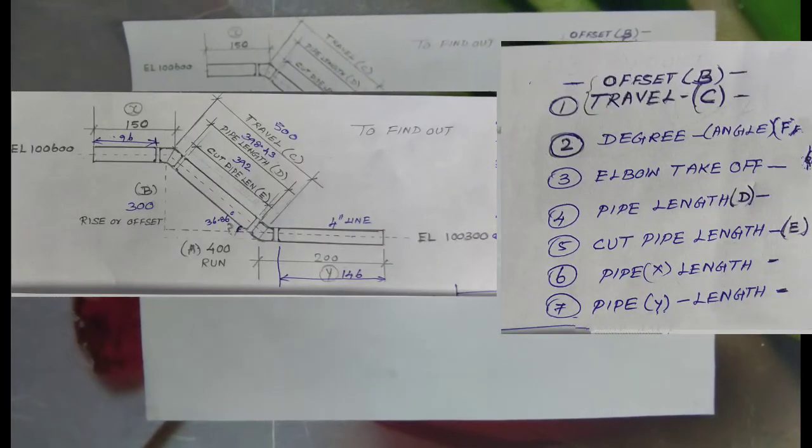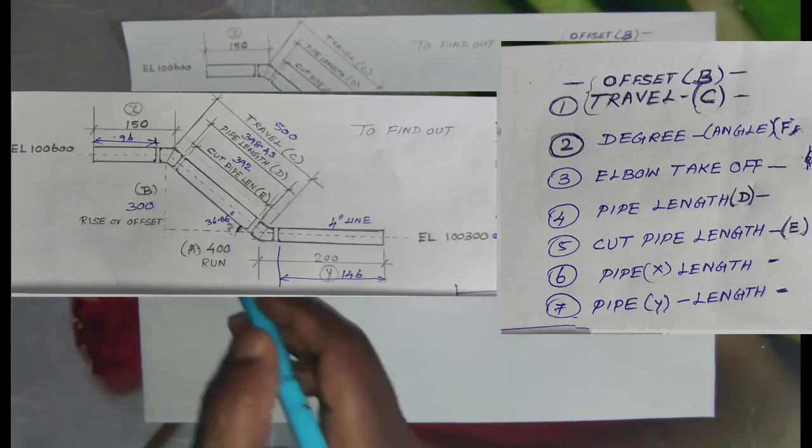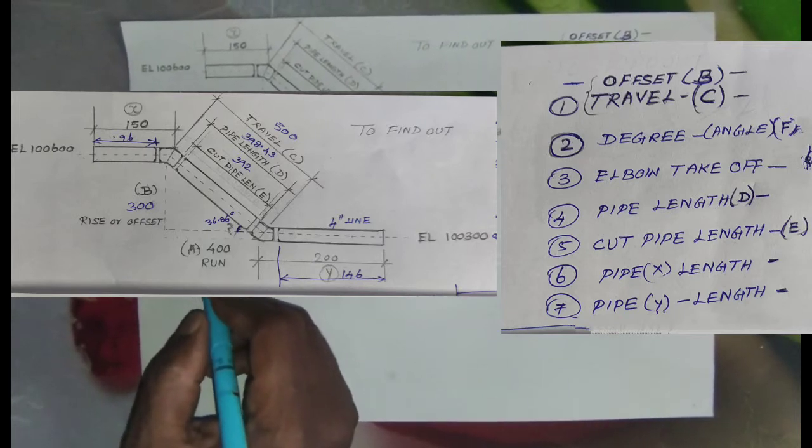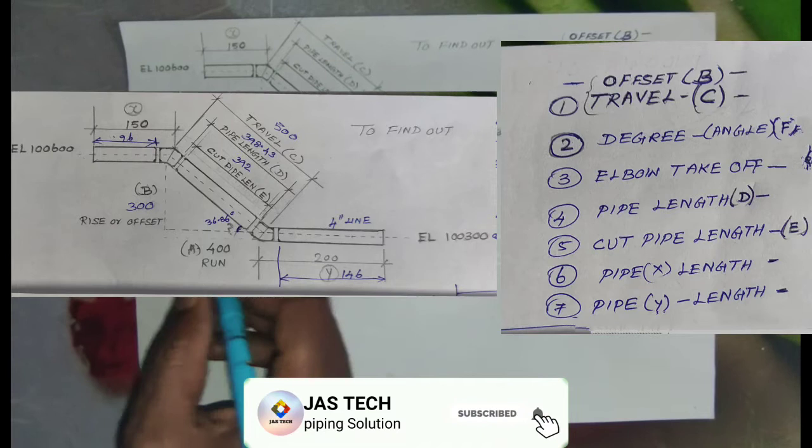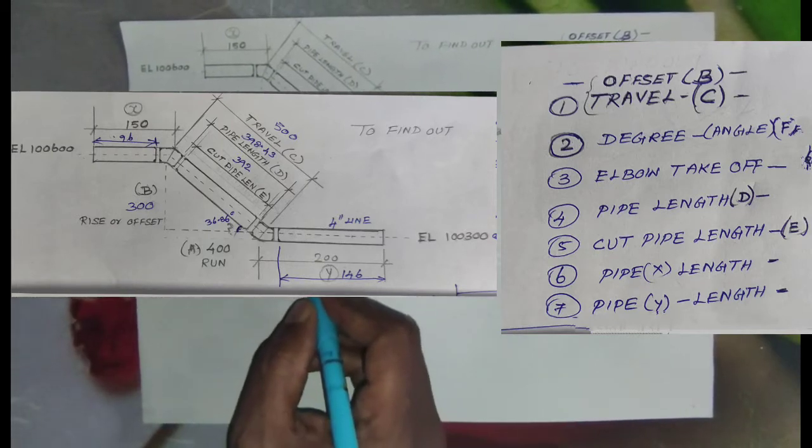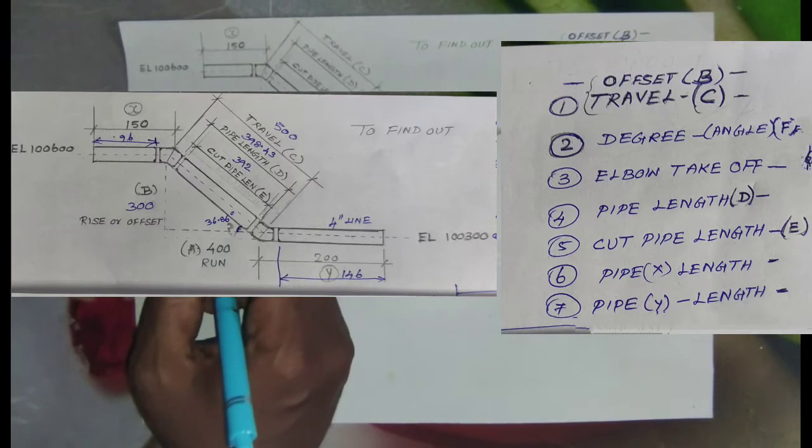Welcome to joystick. Today our topic is to find out Offset B, Travel C, Degree or Angle F, Elbow Takeoff G, Cut Pipe Length E, Cut Length X, and Cut Pipe Length Y.